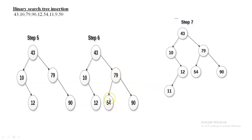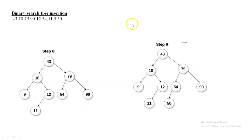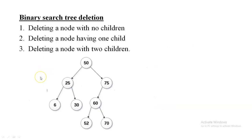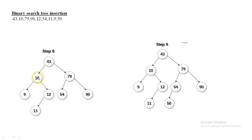Next, insert 11. Compare 11 with 43 — lesser, go left. Compare 11 with 10 — greater, go right. On the right side, 12 is present. Compare 11 with 12 — 11 is lesser, so insert 11 as the left child of 12. Next, insert 9. Compare 9 with 43 — lesser, go left. Compare 9 with 10 — 9 is lesser, so insert 9 as the left child of 10.